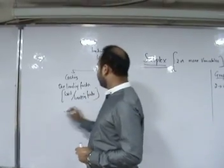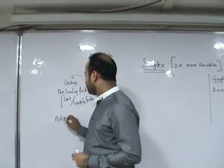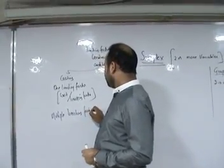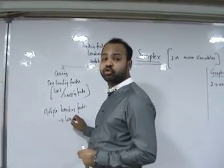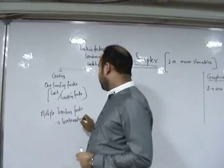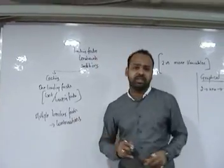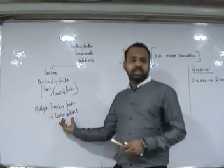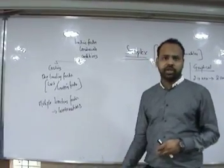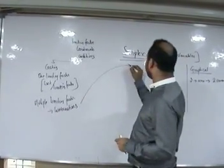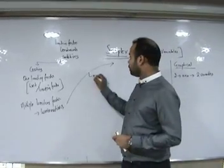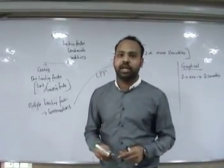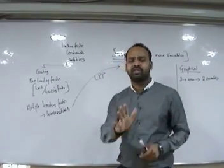If there are multiple limiting factors, there will be many combinations to be considered. To avoid checking out all the possible combinations, we resort to linear programming problem. This is where the answer can be arrived at without actually taking all the possible combinations into consideration.